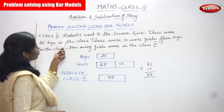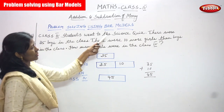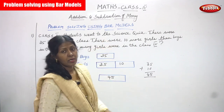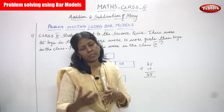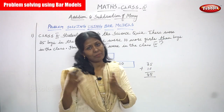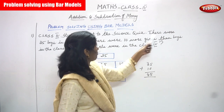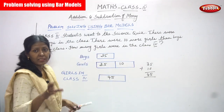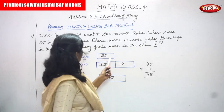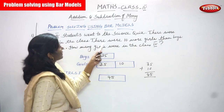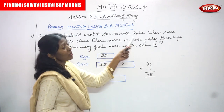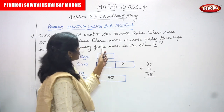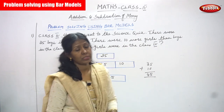First question: Class 4 students went to the science quiz. There were 35 boys in the class, and there were 10 more girls than boys.